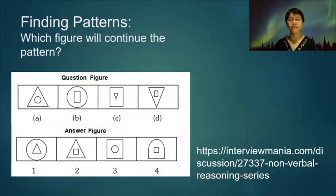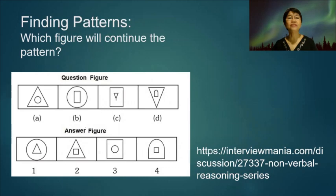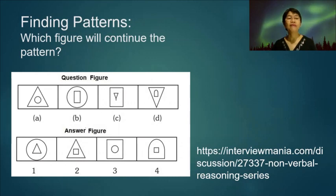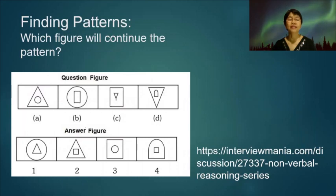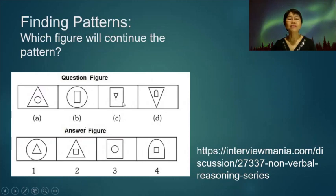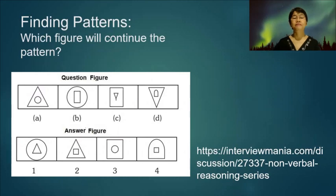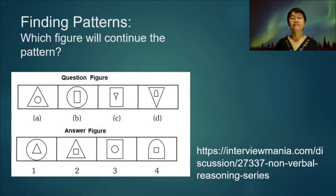One kind of abstract reasoning test is finding patterns: which figure will continue the pattern? Observe the question figure. In figure A, we have a triangle with a small circle inside. In the next figure, the circle is enlarged and we have a new figure inside — a rectangle. In figure C, the rectangle is enlarged and we have a new figure inside — a triangle.